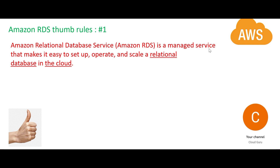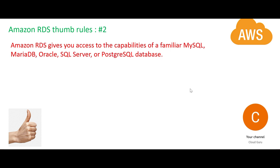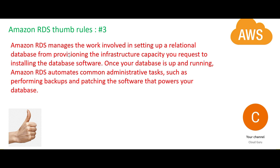The first thumb rule: what is RDS? It is a managed service — specifically a relational database service, not a NoSQL database. It is a relational database on AWS cloud. So if on premises you have Oracle or PostgreSQL, you can move to AWS because RDS supports MySQL, MariaDB, Oracle, SQL Server, and PostgreSQL.